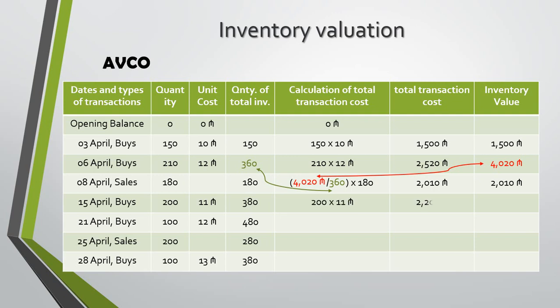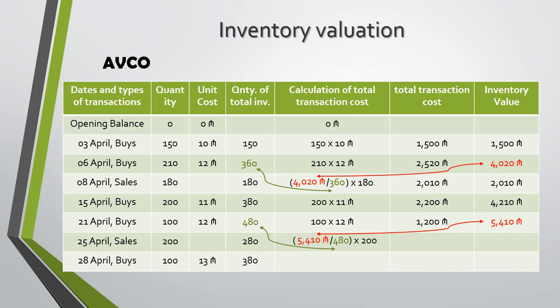The next two transactions are purchases and will be calculated in the same way as the first two — the value of total inventory will be increased by the cost of purchased items. The calculation of the cost sold on 25th April will be the same: we divide the inventory value before the sale (5400) by the quantity of items (400), then multiply by the quantity of sold goods. The end-of-day inventory balance will decrease by the sales cost. Another purchase transaction took place on the 28th of April, and by using the weighted average cost method, our inventory balance at the end of the month will be 4330 ASE.